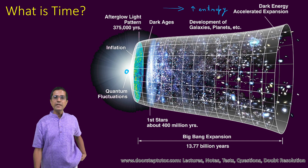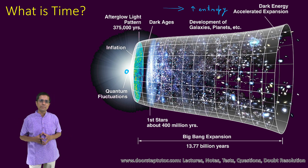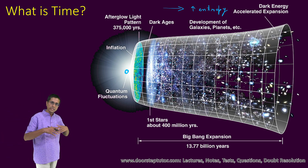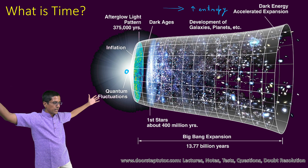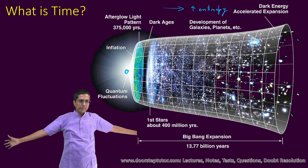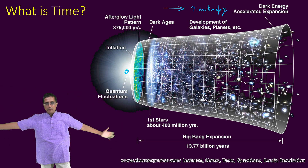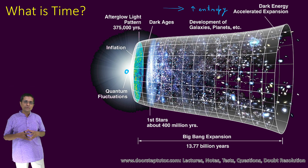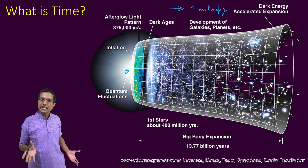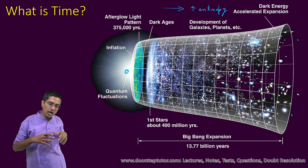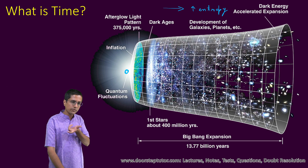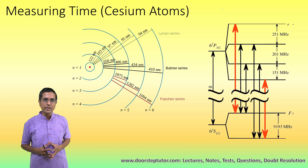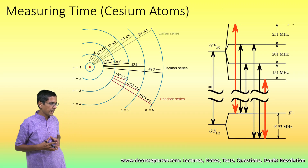Entropy is the degree of randomness in any body. In the case of the universe, it would be all the galaxies moving apart — things becoming more random, more spread apart — so we say the entropy of the universe is increasing. This increase in entropy happens over a period of time, and this is the change I am observing.